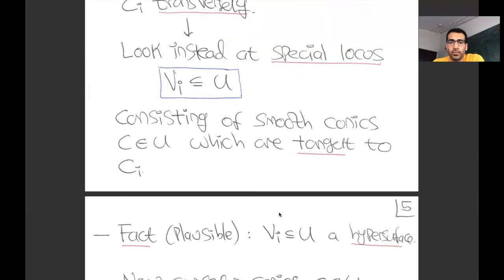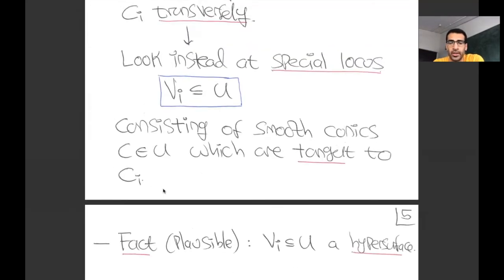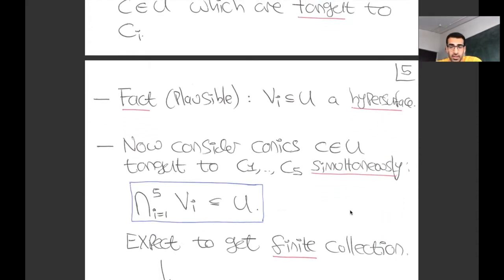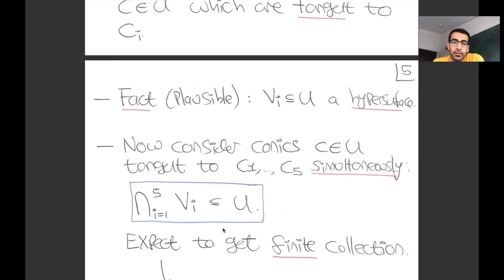We have these loci V_i, one for every conic C_i—we started with these five conics C1 through C5, and for each of them we have some hypersurface consisting of the conics which satisfy this tangency condition. If we want to consider the conics which are tangent to all of them simultaneously, we just need to take the intersection. You see why I expect to find only finitely many: U was a five-dimensional space, an open inside P5, and I'm intersecting five hypersurfaces. As long as the intersection is dimensionally transverse, I expect a finite number of objects.